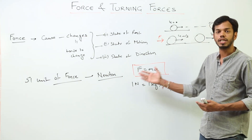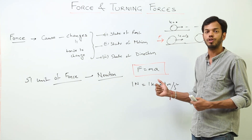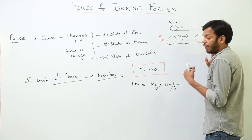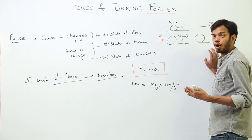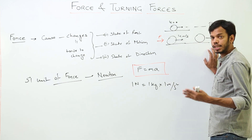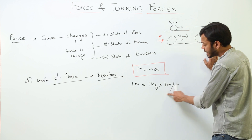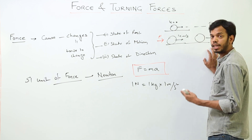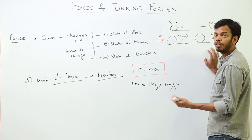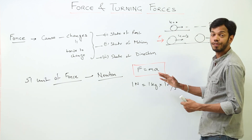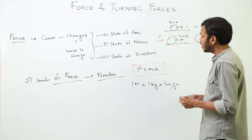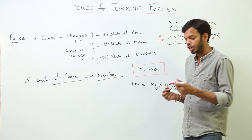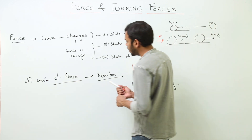To rephrase: when a force acts on a body of mass 1 kg such that its acceleration becomes 1 m/s², then the force is said to be 1 Newton. You can rephrase it any way you like. Now there are CGS units of force as well, so after the SI unit we need to know the CGS unit.